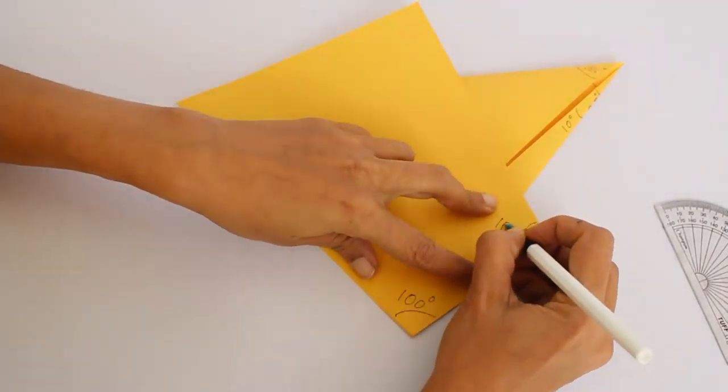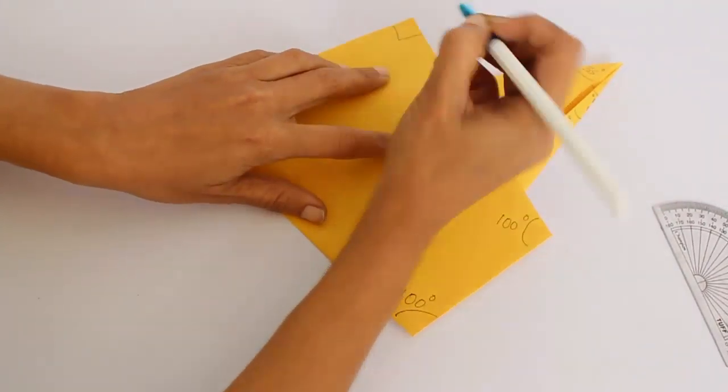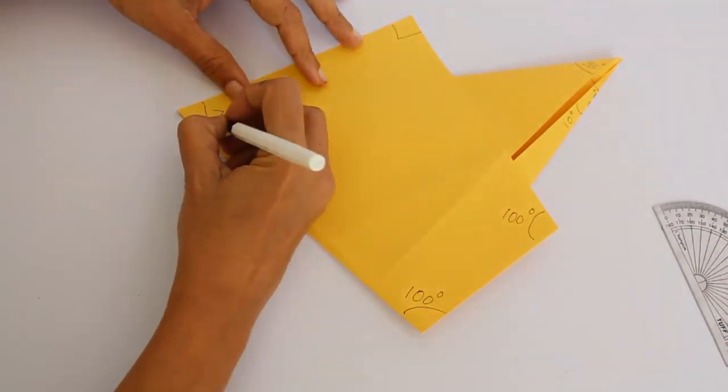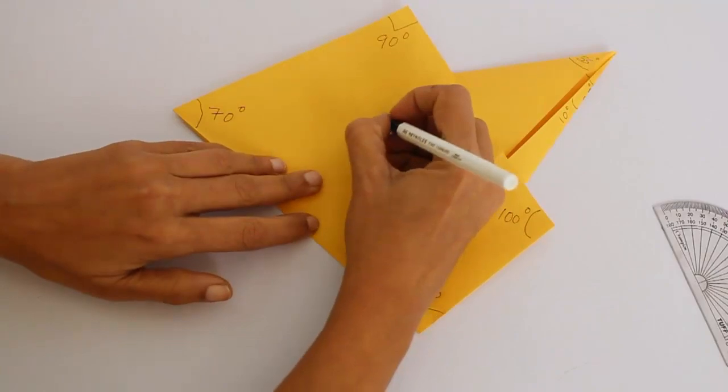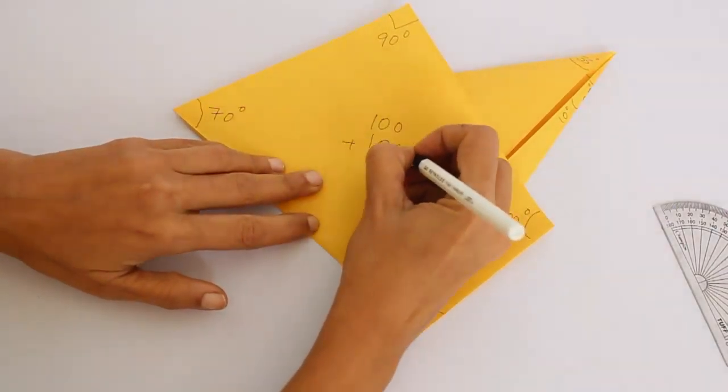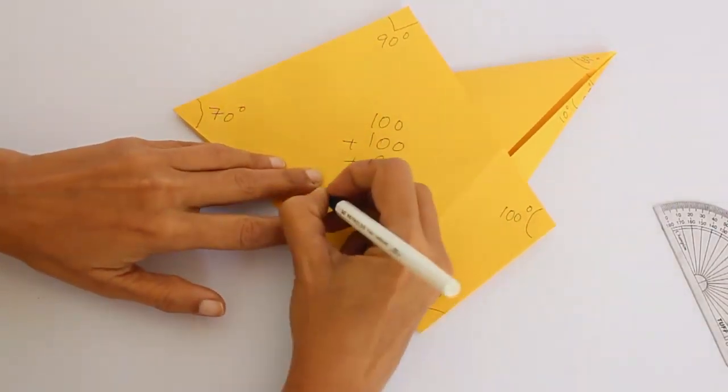We have 100 degrees, 100 degrees, and two corners which is 70 and 90. And you can see that if we add all that up, four angles of a quadrilateral will make 360 degrees.